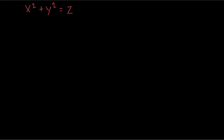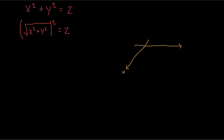Let's say we have this quadric equation x squared plus y squared equals z. Notice that we can rewrite the equation involving the square root of x squared plus y squared. You might be wondering why we would want to rewrite it like that. Well, think about what the square root of x squared plus y squared actually means in the graph.